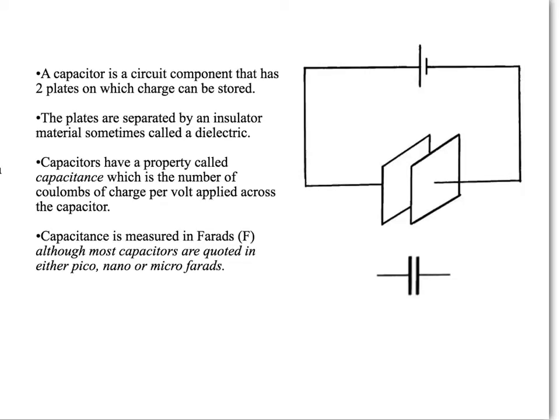A capacitor has two plates, and as you can see on the diagram on the right hand side, you've got one plate here, one plate here, and there's a gap in between them. The gap between them is filled with an insulating material, sometimes called a dielectric material, and it's this that allows a charge to build up on the plate and then this charge can be released through a circuit in the form of a current.